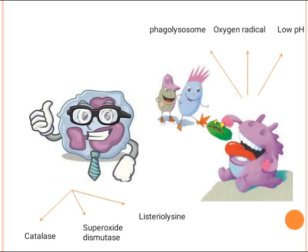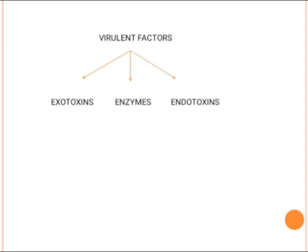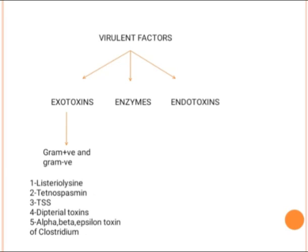If bacteria escape immunity, they carry out virulence using virulence factors including exotoxins, enzymes, and endotoxins. Exotoxins are present in both gram-positive and gram-negative bacteria. Examples include listeriolysin from Listeria monocytogenes, tetanospasmin from Clostridium tetani, TSS exotoxins, diphtheria toxins, alpha-beta-epsilon toxins of Clostridium perfringens, and exfoliative toxins.